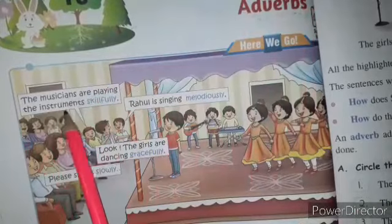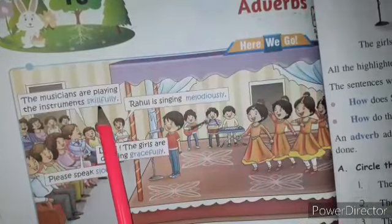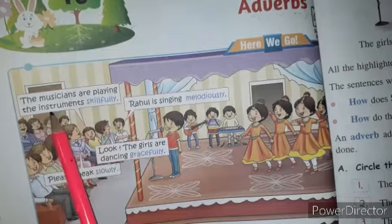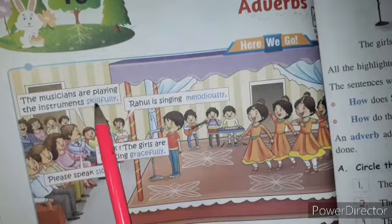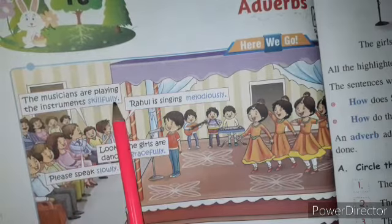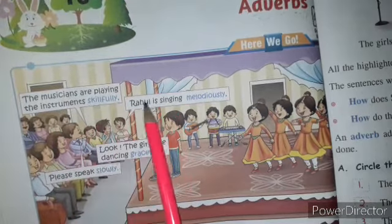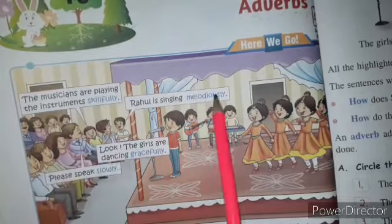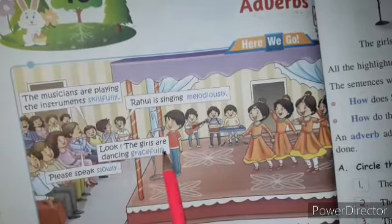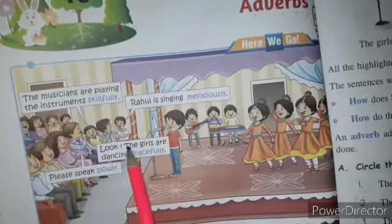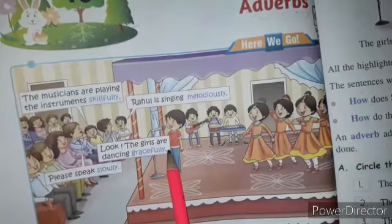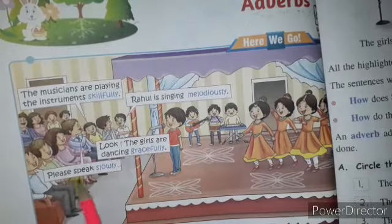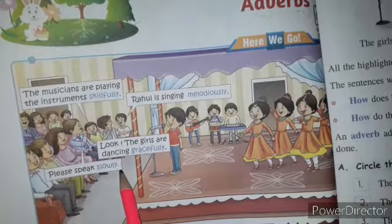The musicians are playing the instruments skillfully. Sangeet kaar, sangeet ke yantro ko bhout hii safai se baja raha hai. Rahul is singing melodious. Rahul mitha gara hai. Look, the girls are dancing gracefully. Ladkiyaan bhout sundar dance kar rahi hai. Please speak slowly. Kirpa karke dhiray bolo.